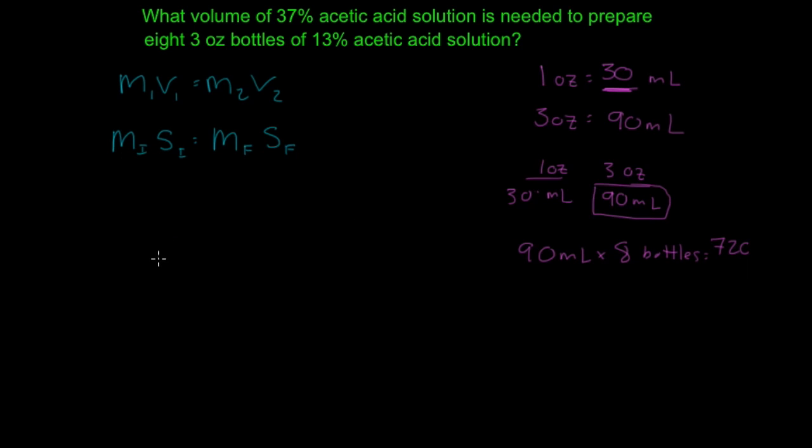So what volume of a 37% acetic solution is needed to prepare 8 3-ounce bottles of a 13% acetic acid solution. So the final volume is going to be 720 milliliters times 13%. And this is going to equal, which one does it give us, does it give us the mass or the volume or the strength? So it gives us the strength and so we have M1 times the strength, which is going to be the 37%.